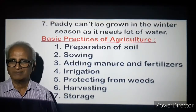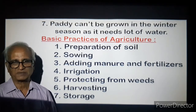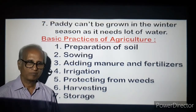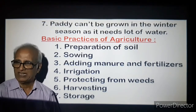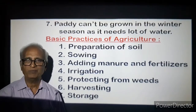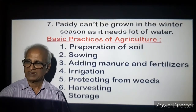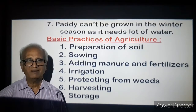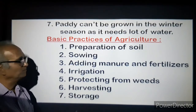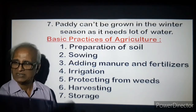Now the basic practices of agriculture. When we say agriculture, there are seven basic steps. The first is preparation of soil — you have to level and till the field, plough it. For ploughing you use a plough or sometimes a tractor. You need different kinds of ploughing tools. The soil has to be prepared well, and if it is short of some nutrients, you have to add them.